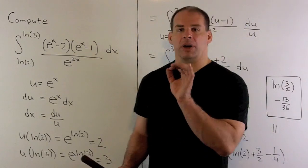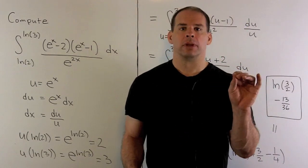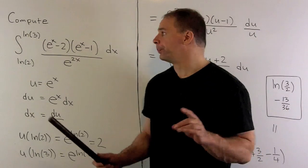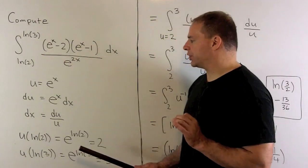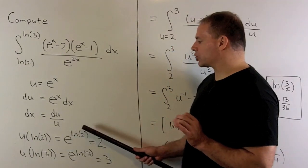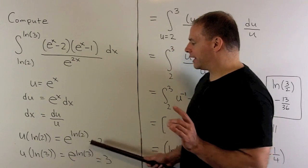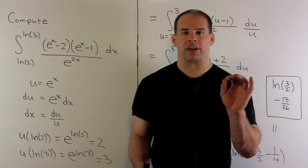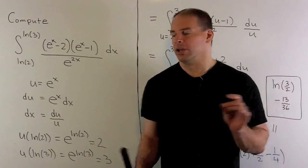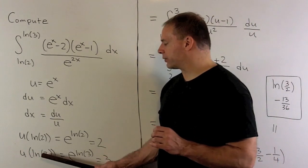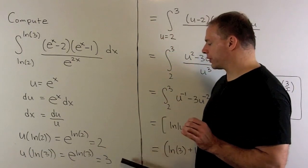Now, I'm going to put everything in terms of u. So we're also going to move our limits from x to u. Natural log of 2 is going to go to e to the natural log of 2. Here I have our identity that says e to the natural log of box is equal to box. So this collapses to 2. And then u of natural log of 3 goes to 3.